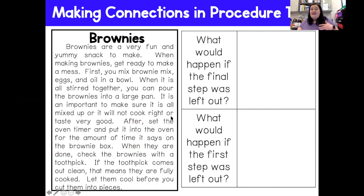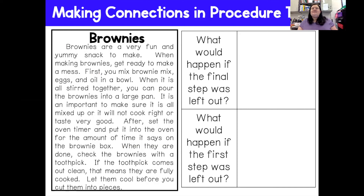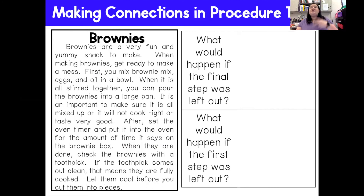Now let's talk about cause and effect. Remember, cause and effect is what happens because of something else that happened. The first question is: what would happen if the final step was left out? Well, if the final step was left out — checking the brownies with a toothpick and making sure they're cool — it could go one of two ways. One, my brownies could be raw, and that would not be safe to eat. Or two, if I let them continue to cook and never checked on them, they could burn — and I have a chance of possibly even burning my house down. So it's really important to check that the brownies are done before pulling them out of the oven.